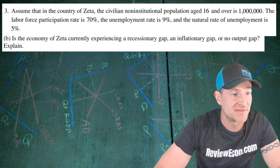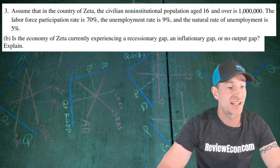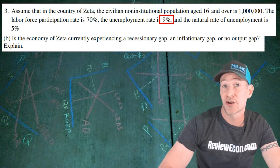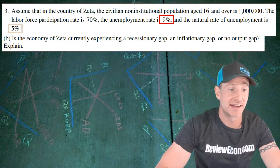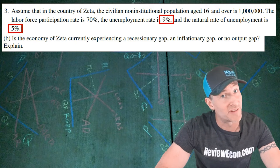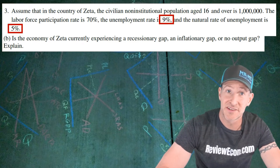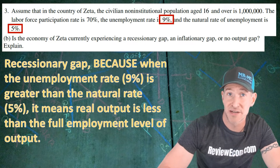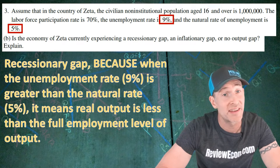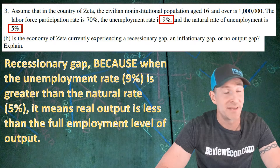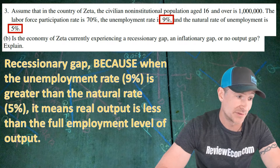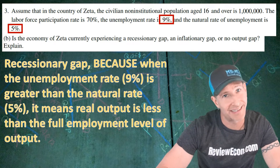For part B, we have to explain if the economy of Zeta has a recessionary gap, inflationary gap, or no output gap at all. Our current unemployment rate is 9% and the natural rate of unemployment is 5%. This economy has a recessionary gap because the unemployment rate of 9% is greater than the natural rate of 5%, which means real output is going to be less than the full employment level of output. An answer like that gets you a point.